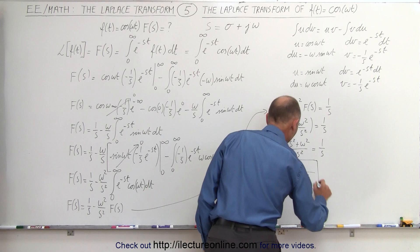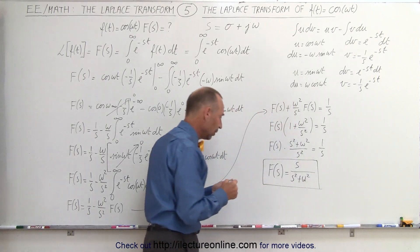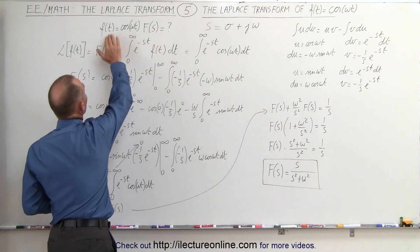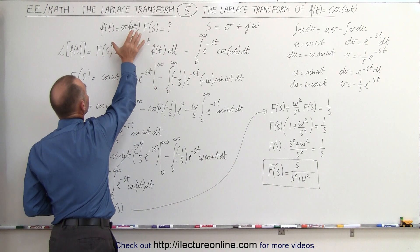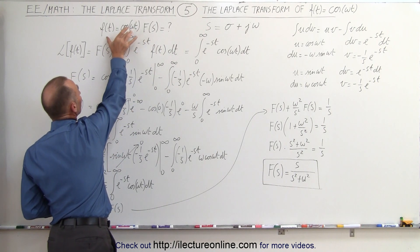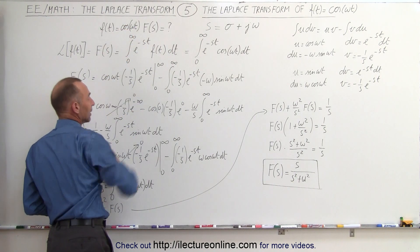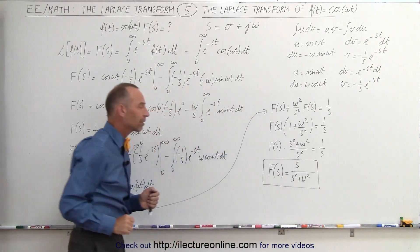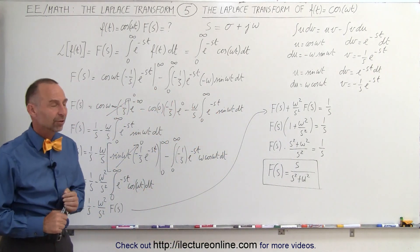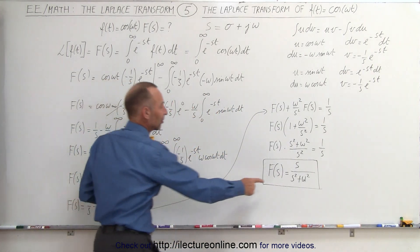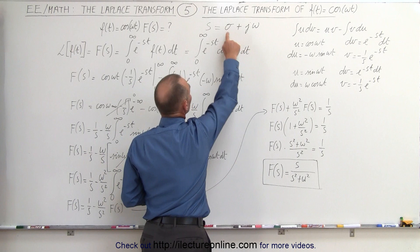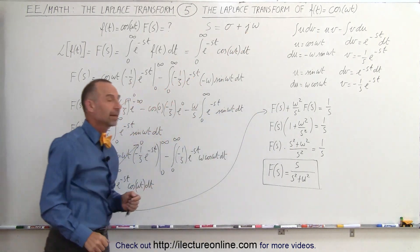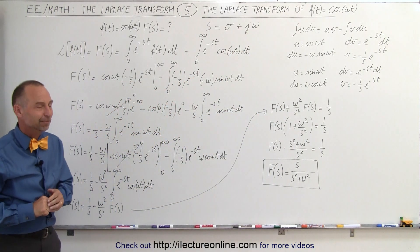And that is the Laplace transform of our original equation f(t) = cos(ωt). It was a function of time in the time domain, and this becomes a function in the complex frequency domain. Remember that s = σ + jω. And that's how we do that.